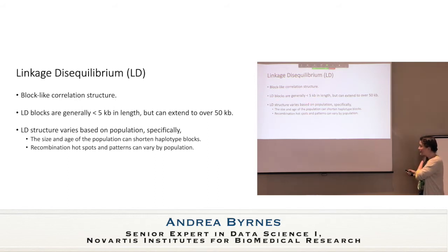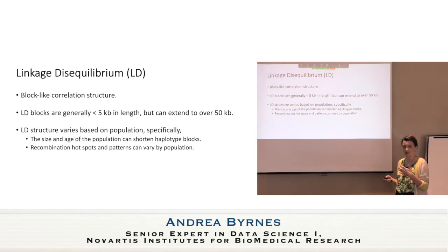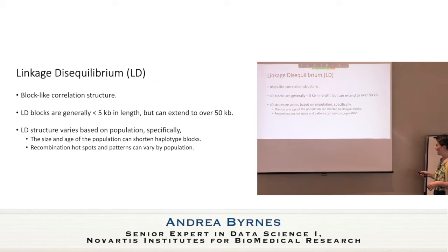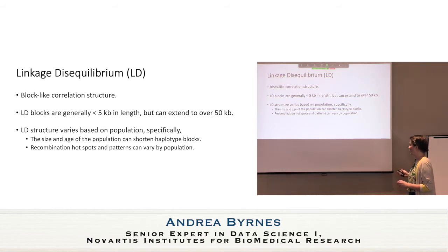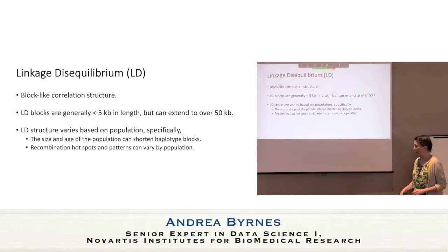LD blocks are usually less than 5 KB in length, but can extend to over 50 KB. LD structure varies based on the population — specifically the size and age of a population can shorten haplotype blocks. This is especially important when talking about different ancestry groups. The Sub-Saharan African population is quite old, which changes things compared to European or Asian populations. Recombination hotspot patterns also vary by population, so a hotspot in one population doesn't necessarily mean the same location is a hotspot in another.